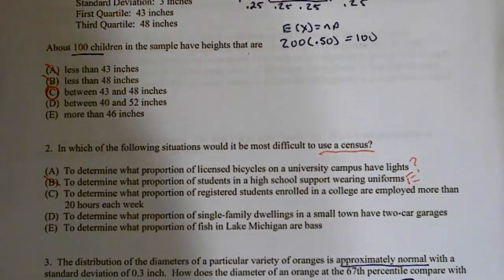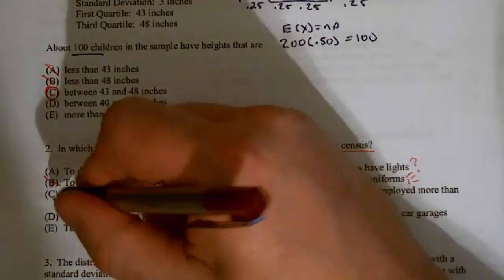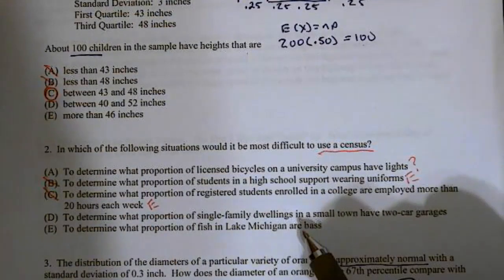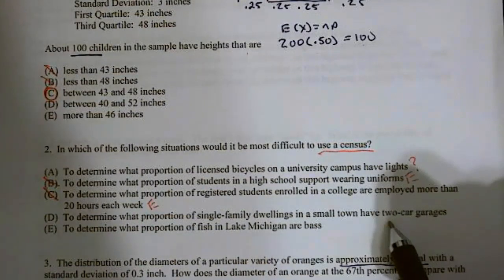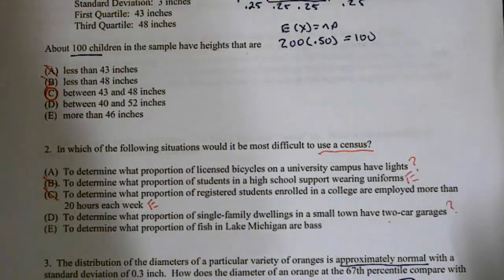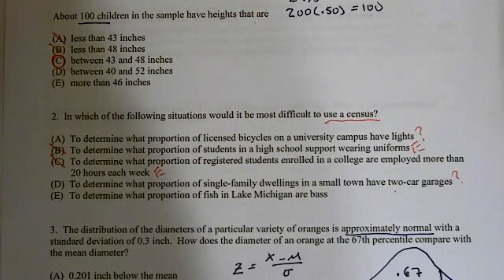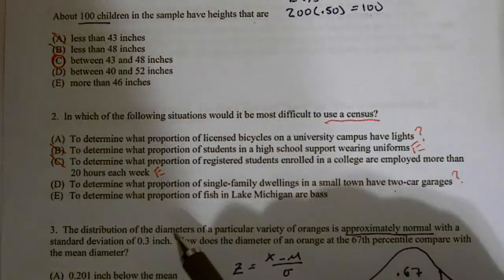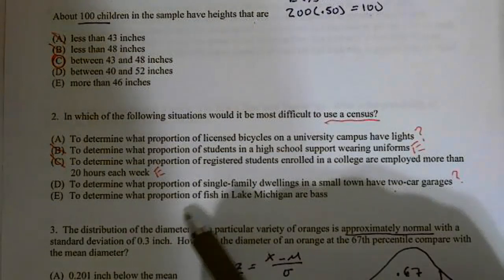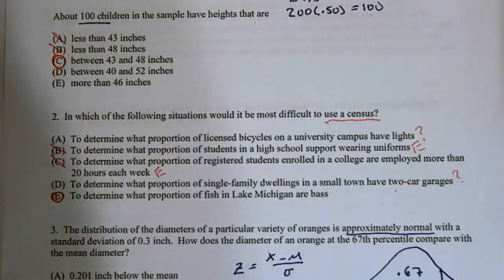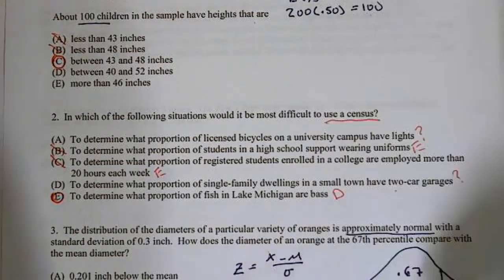I'm pretty sure this one's easy to do because I could just put a poll out and have the students fill that out. To determine what proportion of registered students enrolled in a college are employed more than 20 hours? Once again, I could probably do a poll, that's probably reasonably easy. To determine the proportion of single-family dwellings in a small town that have a two-car garage? That's a little bit of a pain, but I do have access, so I'll put a question mark. To determine what proportion of fish in Lake Michigan are bass? Wow, that would be difficult because I'd have to count all the fish in the lake, and the only way to do that would be to drain the lake. I'm saying that's probably the hardest one. I'm going to go with E on this one.